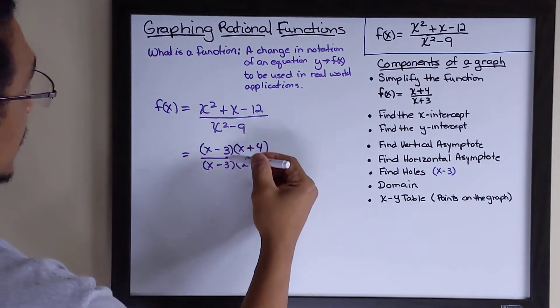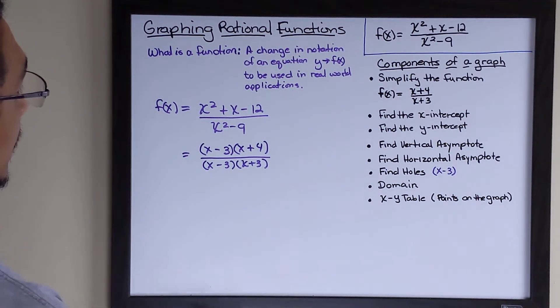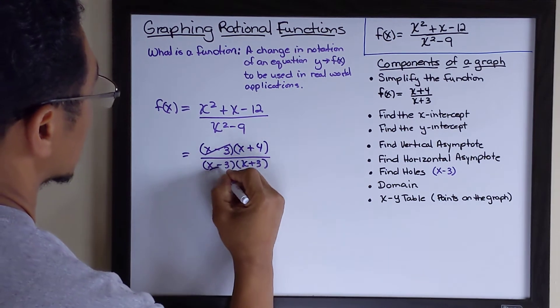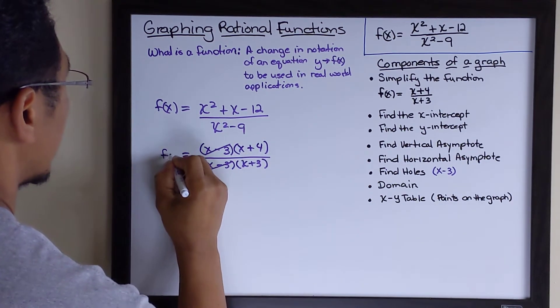So, now we look to see what factors can be canceled between the numerator and the denominator, and the only like factors is going to be x minus 3.